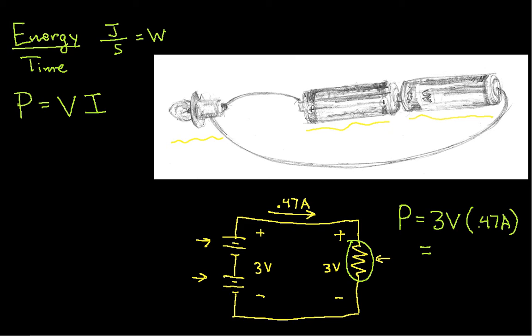So if I perform this computation, I get 1.41 watts. So what this says is that this light bulb is dissipating 1.41 watts. Or another way of thinking about it is every second the light bulb dissipates 1.41 joules, primarily as heat.